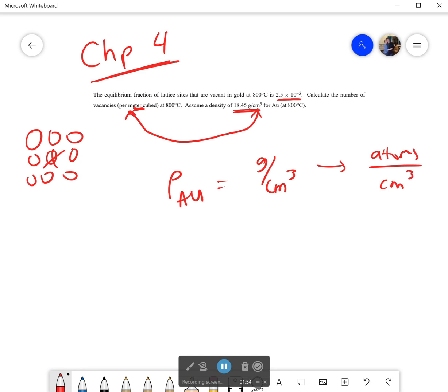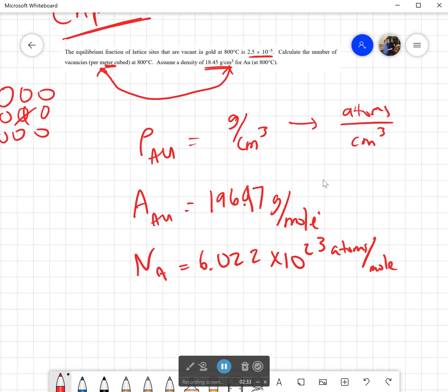Now how do we go from grams to moles? Because remember we have our atomic weight of gold which is going to be equal to 196.97 grams per mole. Okay, and so that would get us from grams to moles. And we also know that thanks to Avogadro's number there are 6.022 times 10 to the 23rd atoms per mole.